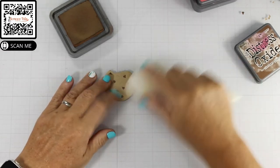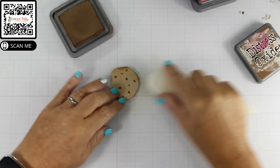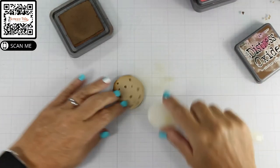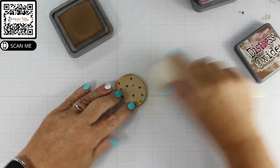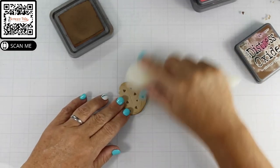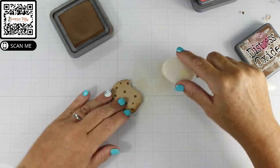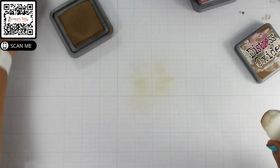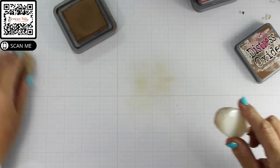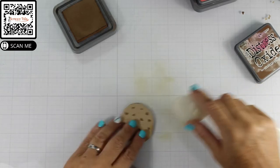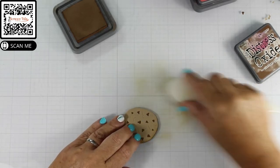So I wanted to deepen the edges because if you're like me, when you bake cookies, you tend to burn them or overcook them at least sometimes. So I brought in my Vintage Photo Distress Oxide ink and just blended kind of sloppily around the edges to give that cooked, baked on goodness.